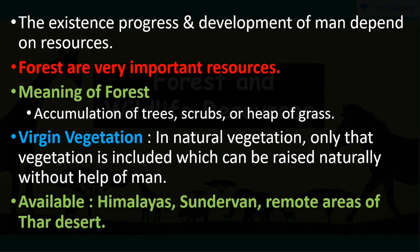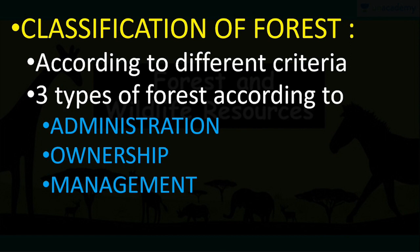The exact meaning of forest is an accumulation of trees, shrubs, or heaps of grass. The next term is virgin vegetation. As far as forest is concerned, vegetation grows by itself — no person goes there to sow seeds. So the definition is: natural vegetation only, that which can be raised naturally without the help of men. This type of virgin vegetation is available in the Himalayas, Sundarbans, and the remote areas of the Thar Desert.